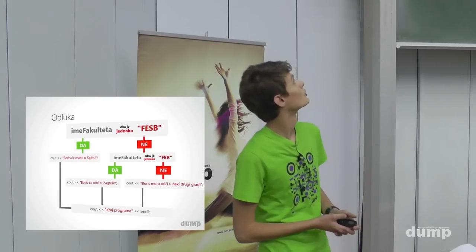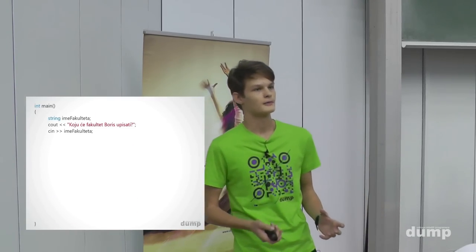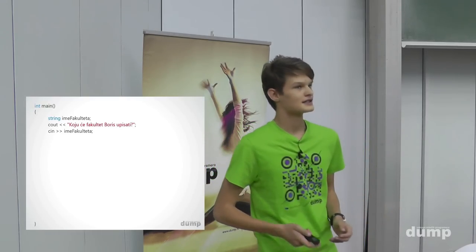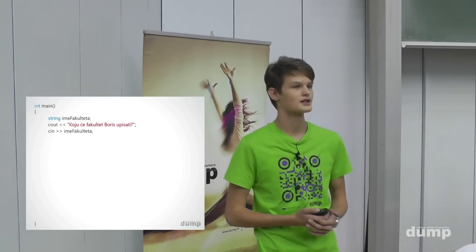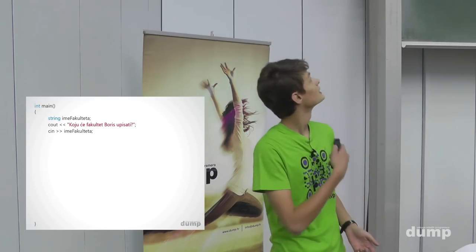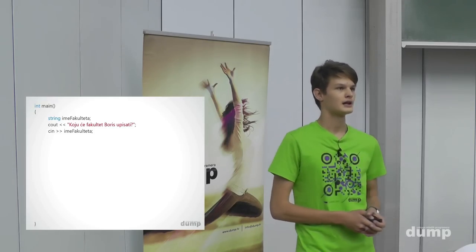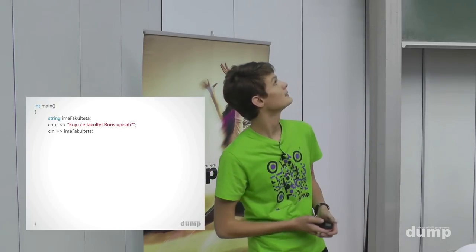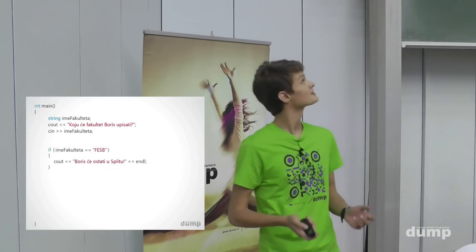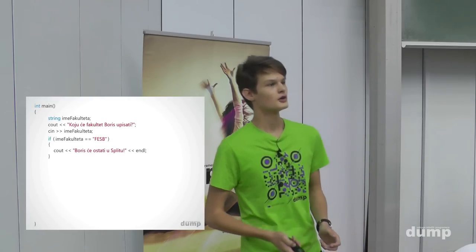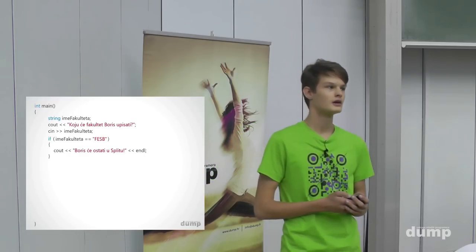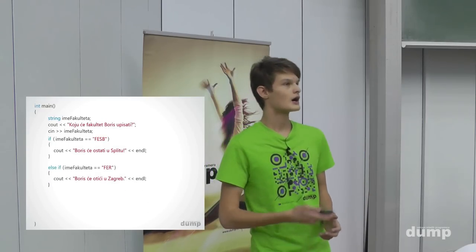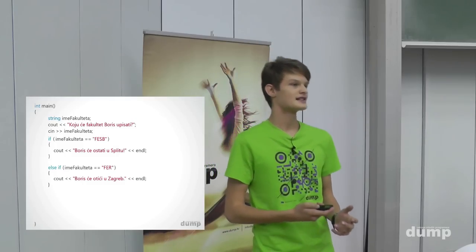Pogledajte kako je to izgledalo u kodu. Imali smo varijablu ime_fakulteta tipa string jer se tu sprema naziv fakulteta. S naredbom cout ispisivali smo korisniku koji fakultet Boris upisuje, a s cin smo ga unosili. Ako je ime_fakulteta jednako FESB, ispisivali smo da će Boris ostati u Splitu. Zatim smo provjeravali je li možda jednako FAER, te ispisivali da će Boris otići u Zagreb.